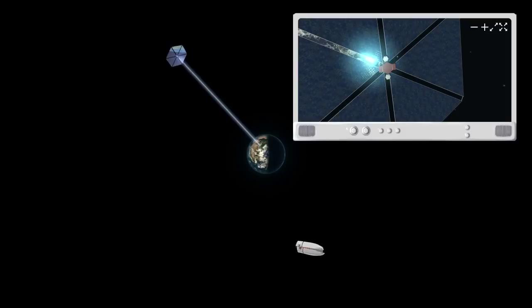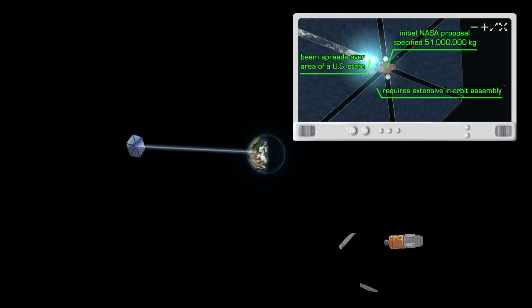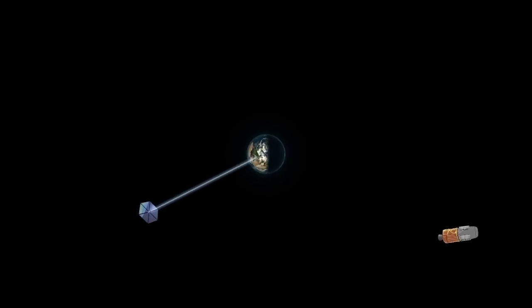Even if the transmitter satellites and their solar panels were to be launched in pieces, they could not begin to provide a return on their substantial cost until they were fully assembled.